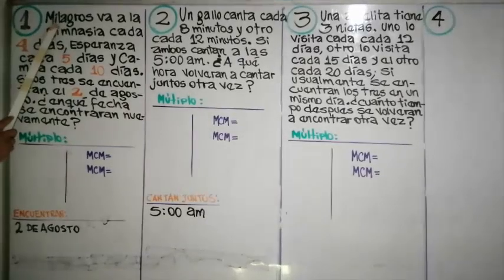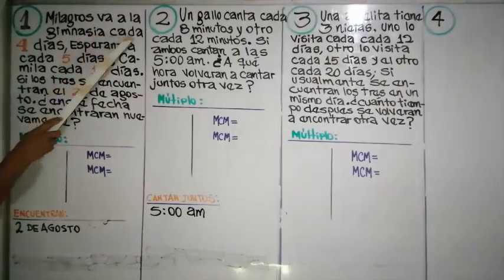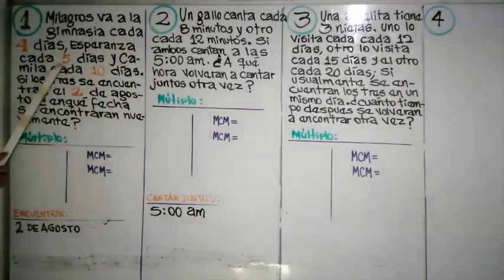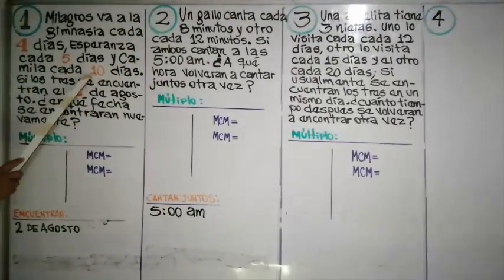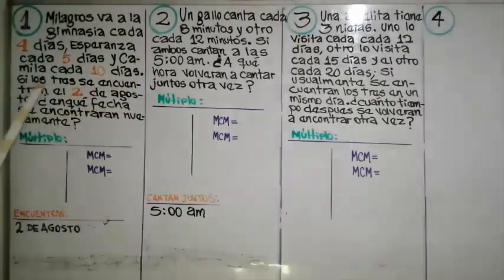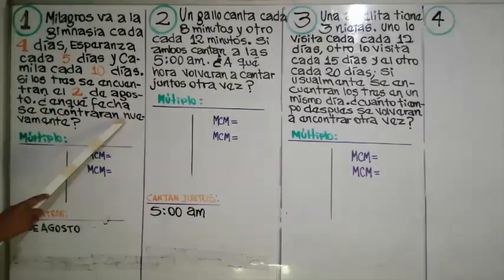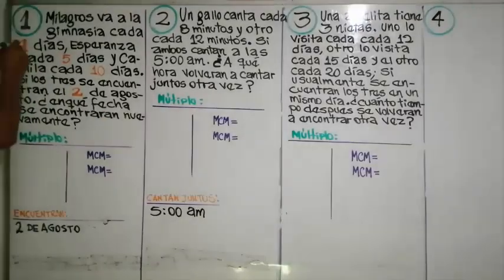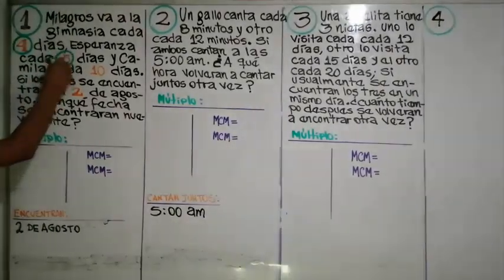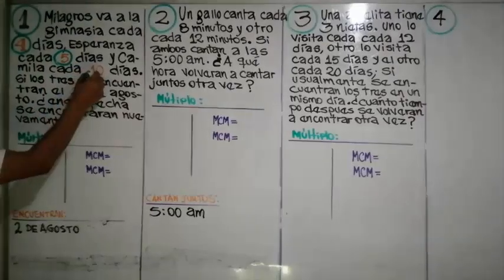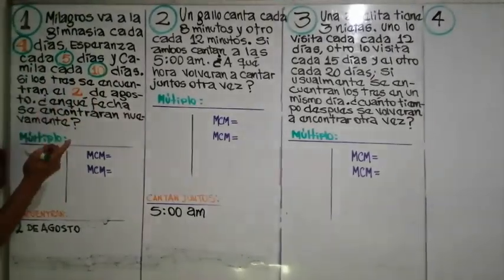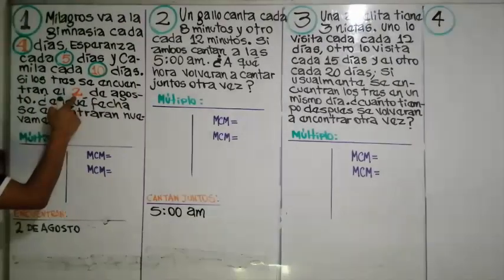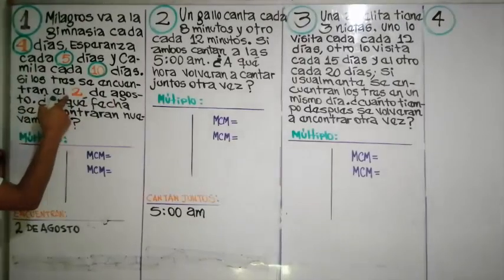Problema uno: Milagros va a la gimnasia cada cuatro días, Esperanza cada cinco días y Camila cada diez días. Si los tres se encuentran el dos de agosto, ¿en qué fecha se encontrarán nuevamente? El dos de agosto se encuentran y van juntos.